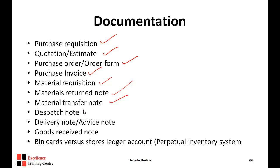When goods are dispatched, the supplier sends a dispatch note saying the goods have been dispatched and will be delivered in one or two days. When the goods are delivered, the delivery person brings a delivery note which is signed by the customer confirming the goods are delivered. With the help of the delivery note, you raise the goods received note confirming the goods received are fine.